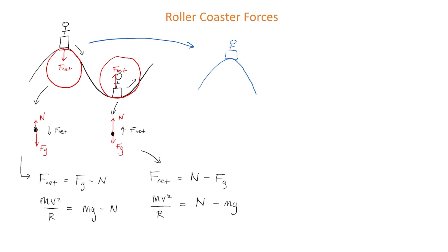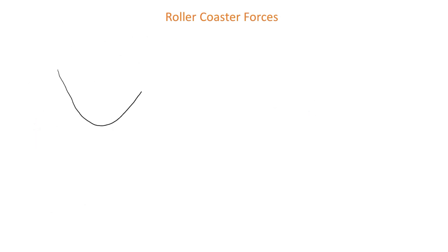The most important question here is what is the minimum speed the rider needs to stay on the tracks and not fly off. The minimum speed is √(rg) — exactly the same formula as before. I challenge you to use the F_net equation from the top of the hill to prove that this equation is true.